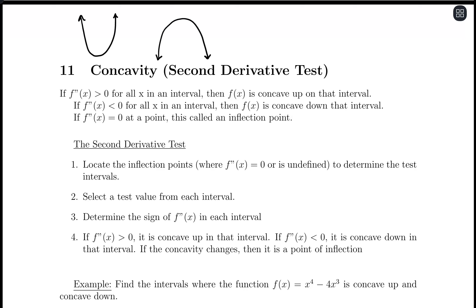A parabola opening upward is concave up, going from decreasing to increasing. Concave down is increasing to decreasing. We want to relate this curvature — concave up and concave down — to our second derivative. Concave up occurs where our second derivative is positive, and concave down occurs where our second derivative is negative.